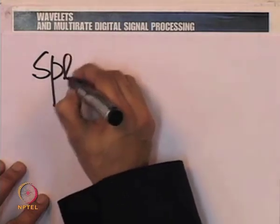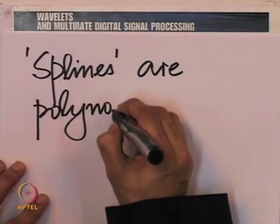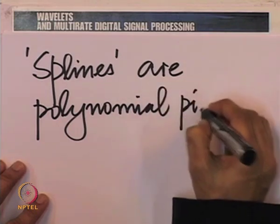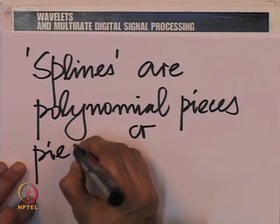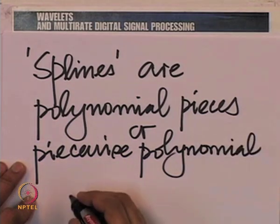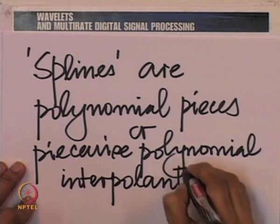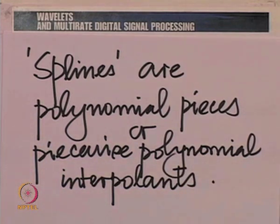Splines are piecewise polynomial functions — more precisely, piecewise polynomial interpolants: functions that interpolate, that join, that complete in-between samples using piecewise polynomials. As you can see, there is a generalization here from the idea of piecewise constant approximation with which we began the discussion on the Haar multiresolution analysis.